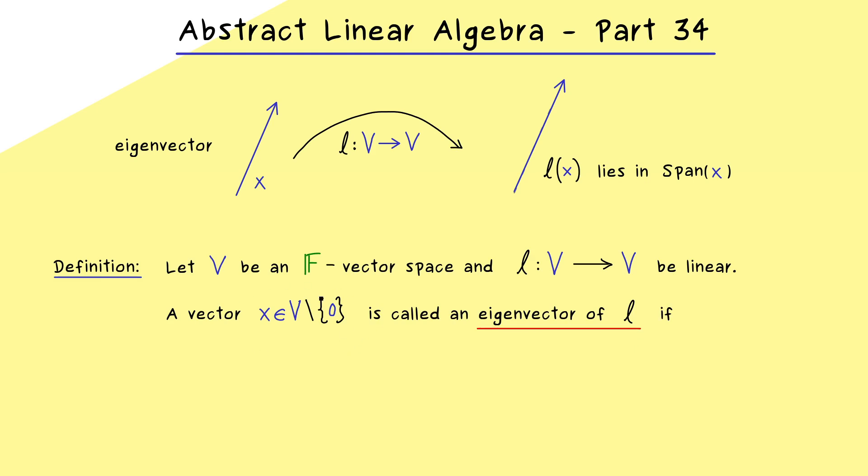However, for any other vector in V it's quite surprising that the linear map is just given by scaling. Hence it means that we can find a scalar lambda in our field F. And this one should satisfy that the image Lx is given as lambda times x. So this is the standard equation for eigenvectors and eigenvalues,